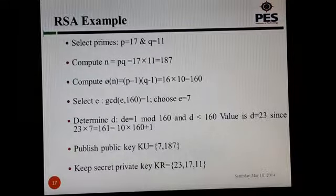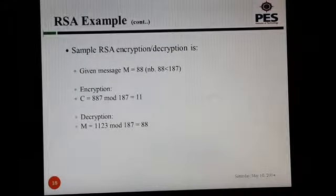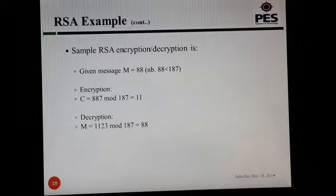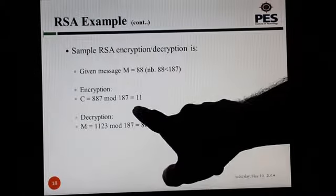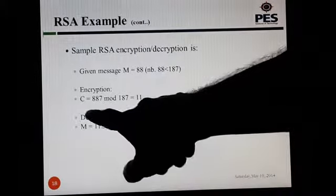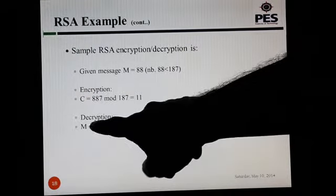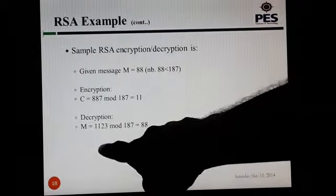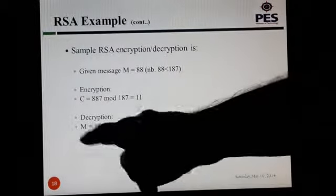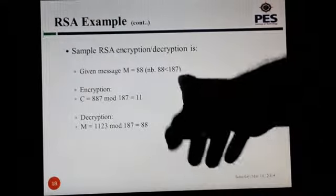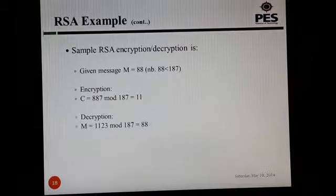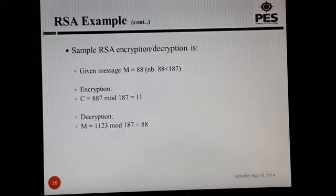For the simple RSA encryption/decryption example with message m = 88: since 88 < 187, encryption gives c = 88^7 mod 187 = 11. For decryption, m = 11^23 mod 187 = 88. The decrypted message is 88, which matches the original message sent.